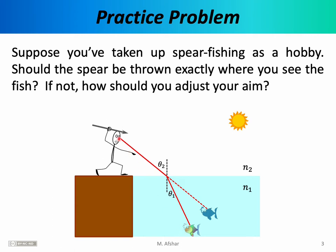Rather than throwing the spear at an angle alpha, you really should be lowering your aim a little bit and throwing the spear at a greater angle beta. In theory, given some coordinates and angles, we could calculate alpha and beta. The point of this problem simply is that the fish is not located where you see it — the actual location of the fish is a little bit lower than the line of sight would suggest.